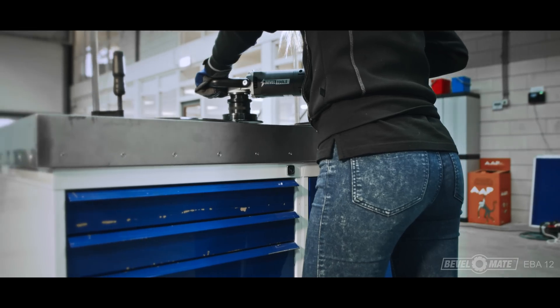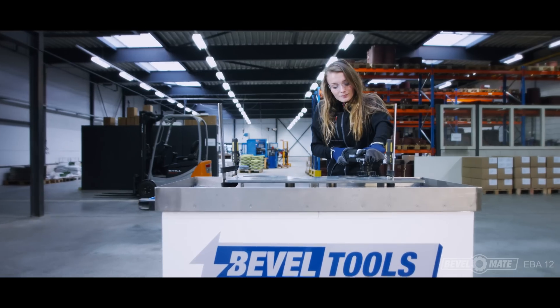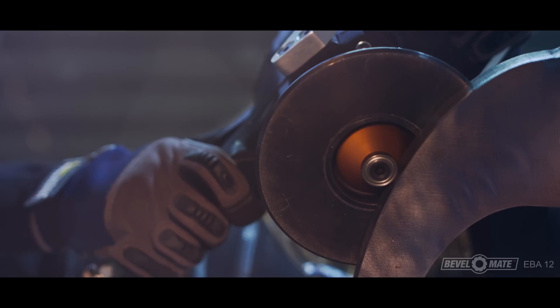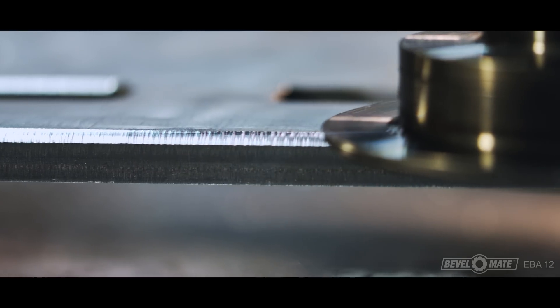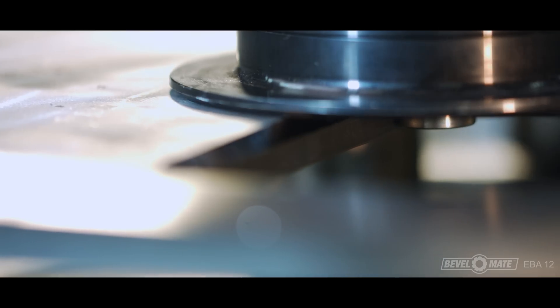For the best results, keep in mind the chamfer direction. When you chamfer a plate, you chamfer from left to right. The inside of a tube or pipe is chamfered clockwise, and the exterior of a tube or pipe counterclockwise.